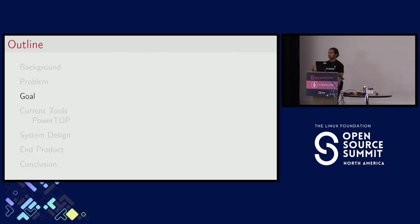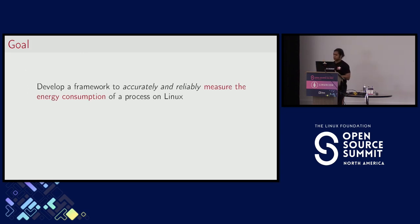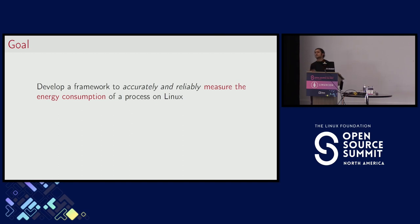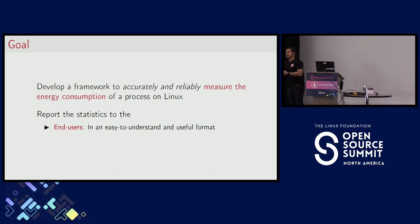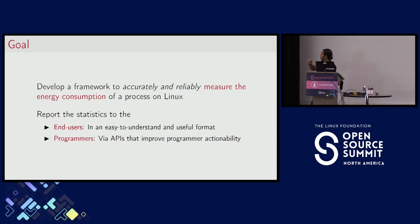So what is the goal of my project? My goal is to develop a useful framework to accurately and reliably measure the energy consumption of a process on Linux. What is the impact of this data? First, we want to report these statistics to the end user — remember our young undergrad who just wanted to study for his exam and needed to kill the battery-draining applications. Second, a key stakeholder would be programmers: we want to report, via useful APIs, data that improves programmer actionability — enabling programmers to take action on their code using this data.